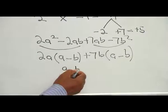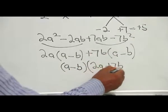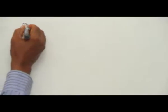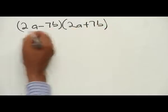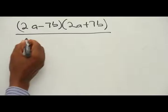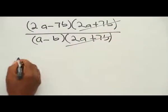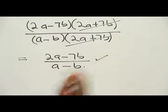Since (A minus B) is common to both pairs, we factor it out: (A minus B)(2A plus 7B). Coupling the numerator and denominator together, we have (2A minus 7B)(2A plus 7B) divided by (A minus B)(2A plus 7B). The (2A plus 7B) terms cancel, leaving the simplified result: (2A minus 7B) all over (A minus B).